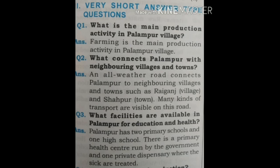Moving on to very short answer type questions. Question 1: What is the main production activity in Palampur village? Farming is the main production activity in Palampur village. Question 2: What connects Palampur with neighboring villages and towns? An all-weather road connects Palampur to neighbouring villages and towns such as Raiganj and Shampur. Many kinds of transports are visible on this road.